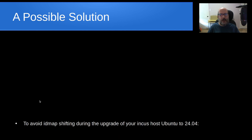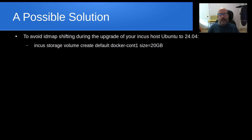With help from Stefan Graber, the chief maintainer of Incas, he came up with one possible solution that I'm going to present here. To avoid this ID map shifting during the upgrade of your Incas host from Ubuntu 22.04, assuming you want to upgrade to Ubuntu 24.04, you can follow these steps prior to the upgrade. You can create an Incas storage volume using the command: incas storage volume create in the default pool, creating a volume called docker-cont1, and setting the size equal to 20 gigabytes.